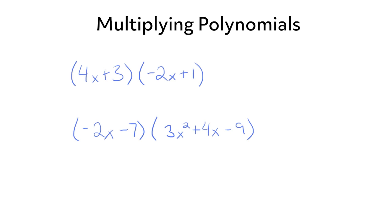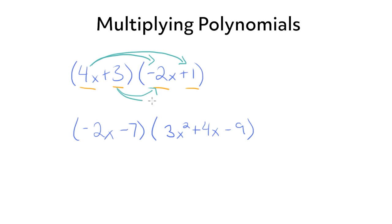So to multiply polynomials, you need to multiply each part of the first polynomial by each part of the second polynomial. Which if we draw arrows to show that, it can look a little bit complicated. It can sometimes be tricky to keep track of, so we really want to make sure that we have a system for how to solve these problems so that we don't miss any steps.